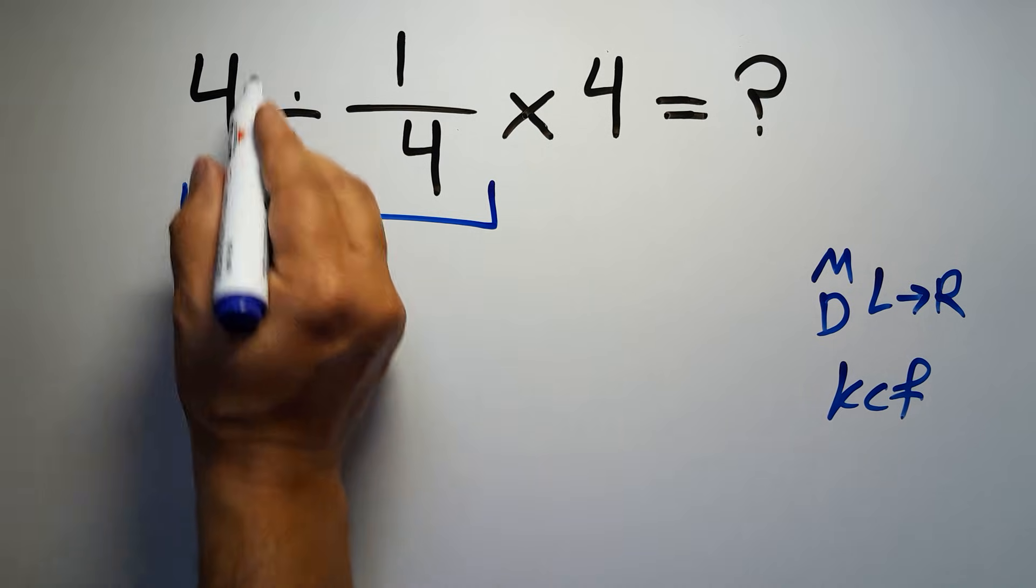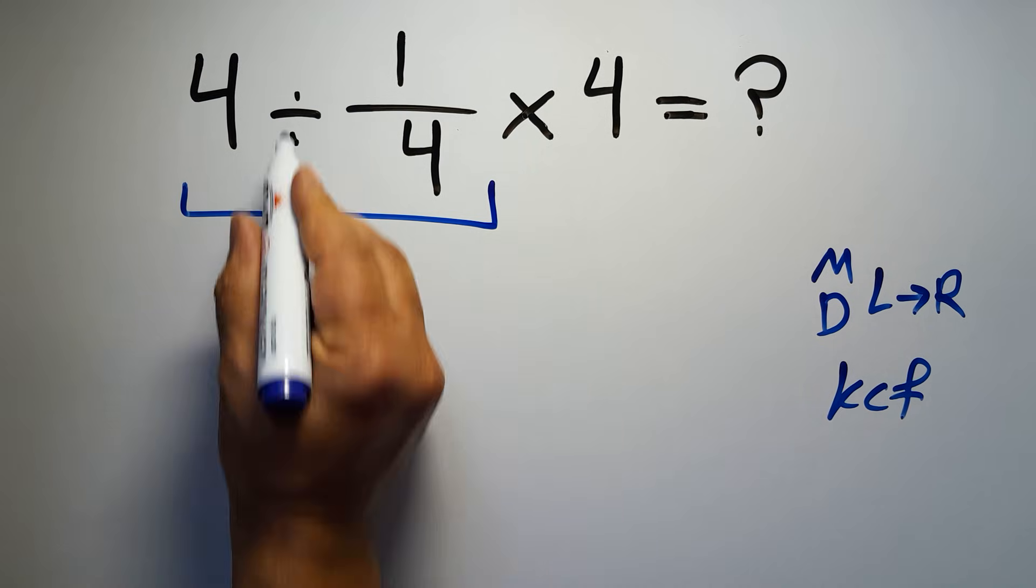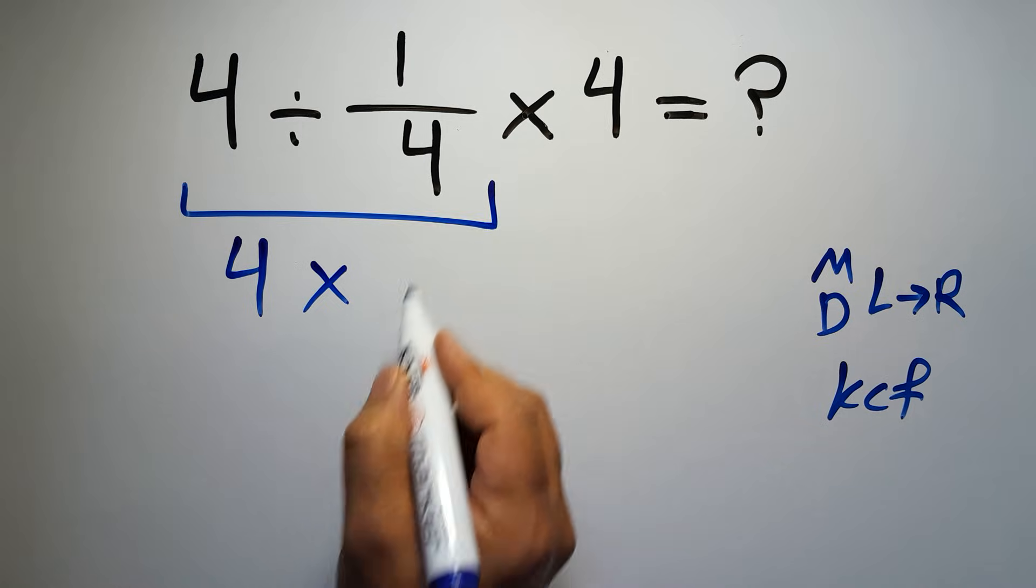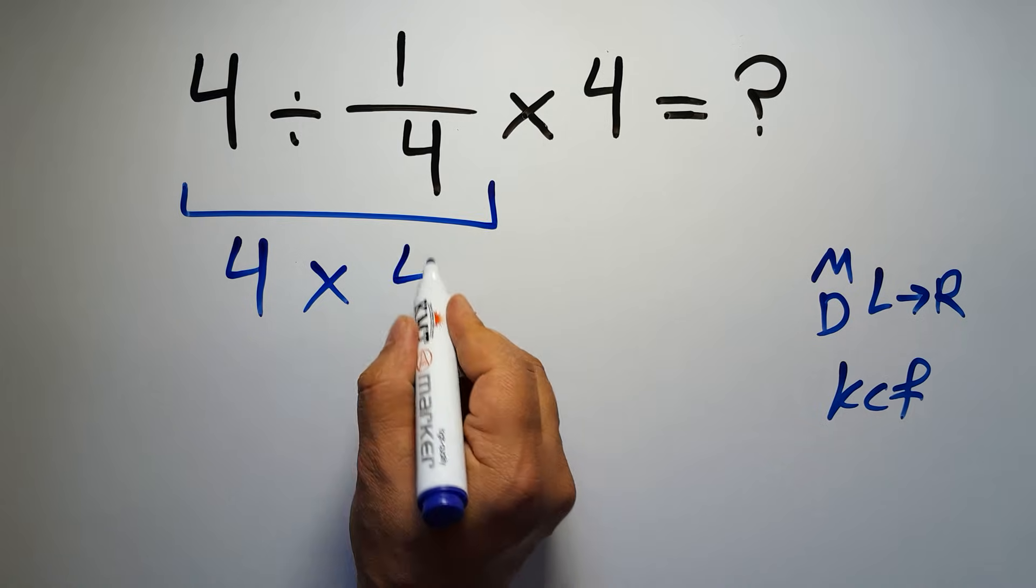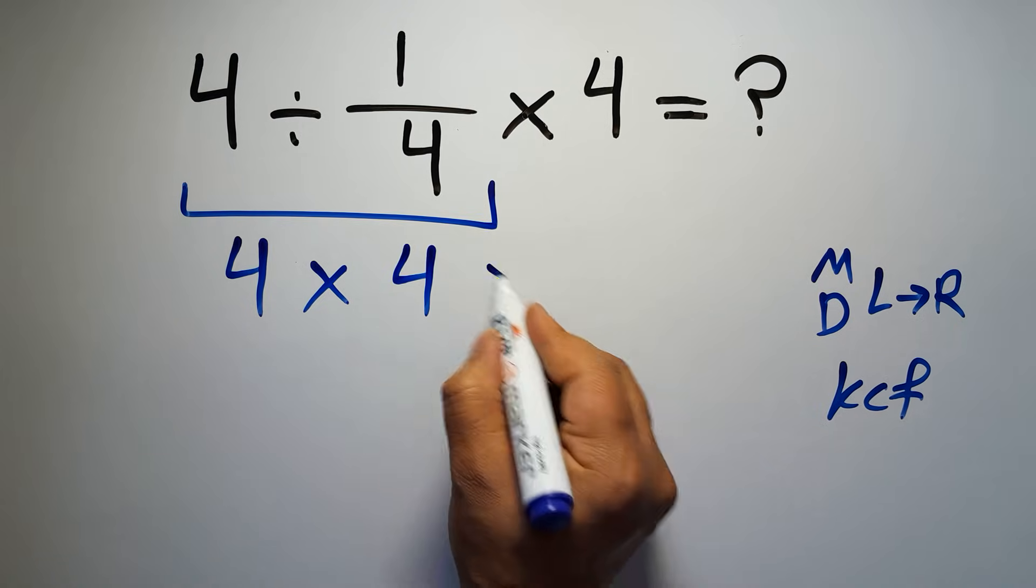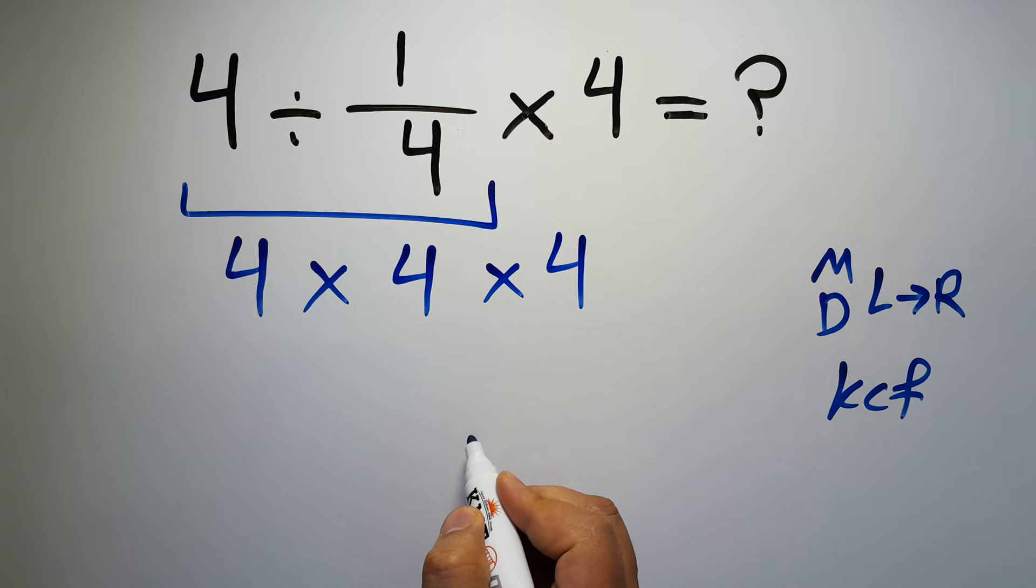We can write, keep the first fraction, change division to multiplication and flip the second fraction. And again here we have times 4.